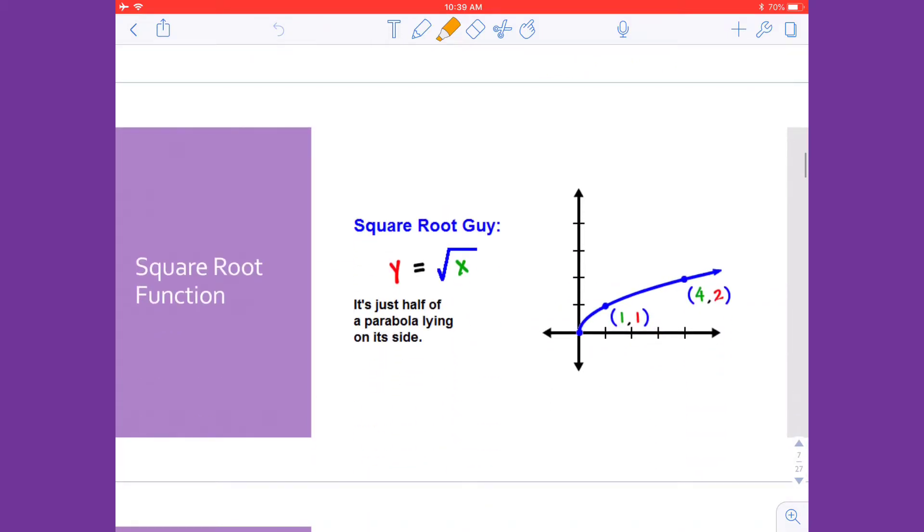Our next graph is the square root function and I like to think about this as s for square root, s for swimmer. If you imagine you were standing on the edge of a pool and getting ready to dive in, that's the shape that you would make. Your body would be a little hunched over, your arms would be out in front of you, so it looks kind of like a swimmer getting ready to dive. This graph starts at the origin and its equation is y equals square root of x.